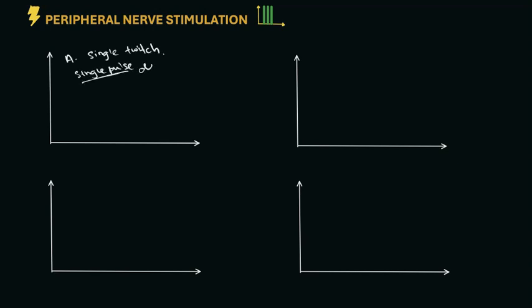So let's go to the actual patterns. The first one is single twitch, which is a single pulse delivered every 1 to 10 seconds, or equivalent to 1 to 0.1 hertz. There's a single stimulus, about 0.2 milliseconds. As the block increases, the intensity of the evoked response will reduce.